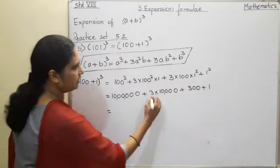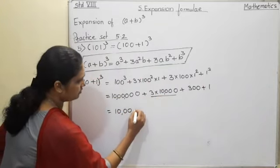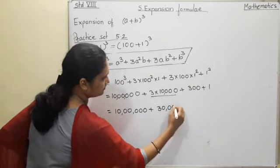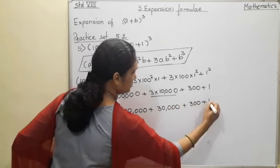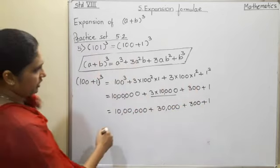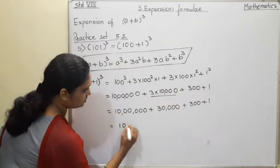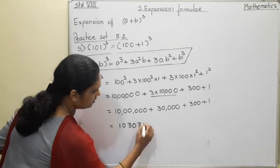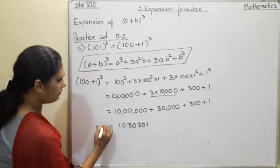Now students, here we have to multiply so we will write plus 30,000 plus 300 plus 1. Now if we add it will be 1,030,301. So this is the cube of 101.